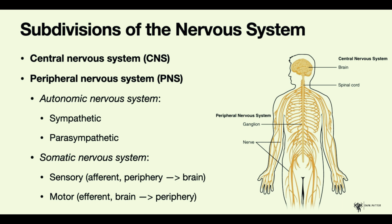The somatic nervous system is thought to be under voluntary control, as opposed to the autonomic nervous system, and we also divide it into two parts. The first is the sensory part, which is responsible for transmitting sensory information about the environment back to the brain. It is called afferent because the information flows from the peripheral nervous system back to the central nervous system.